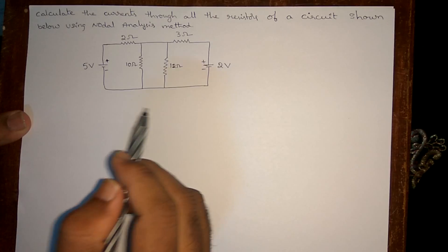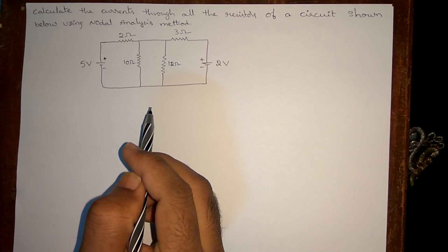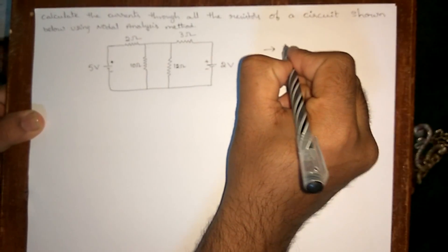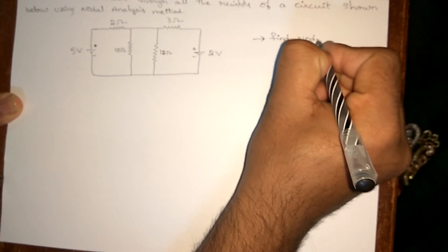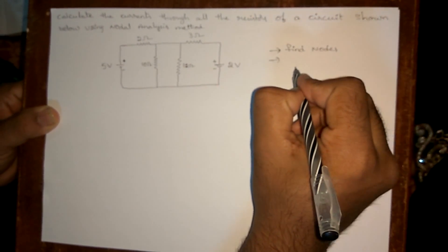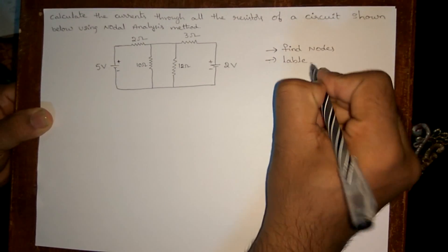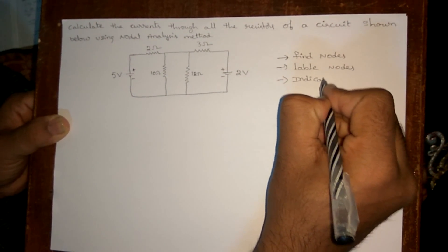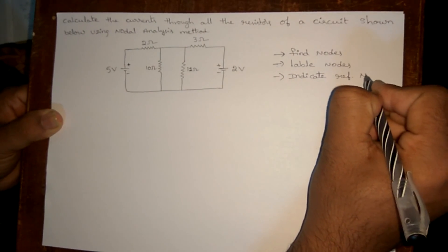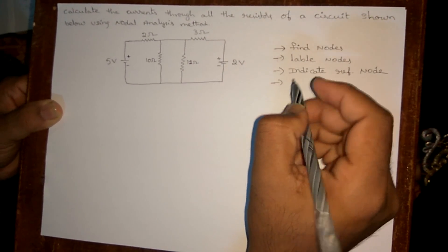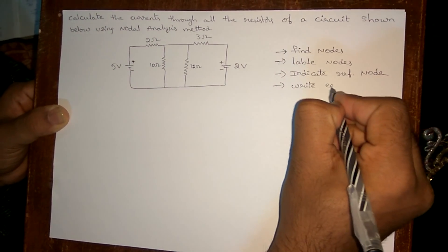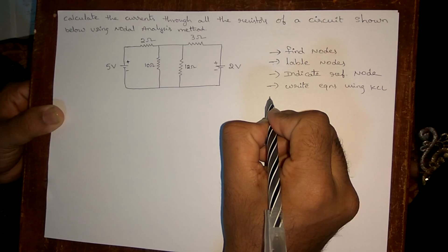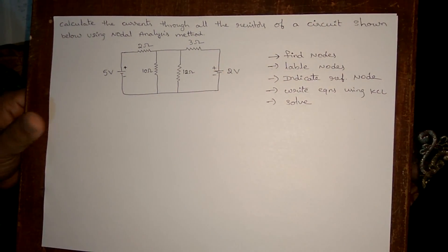When you are going to use the nodal analysis method, you have to remember five important things. First, find the nodes of the circuit. Second, label those nodes. Third, indicate the reference node. Fourth, write equations using KCL — Kirchhoff's current law. And finally, solve those equations to get the answers.